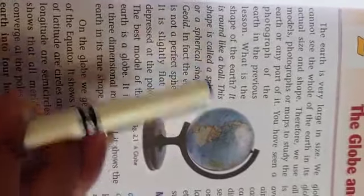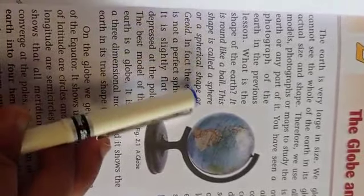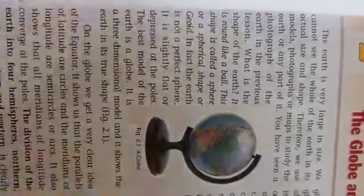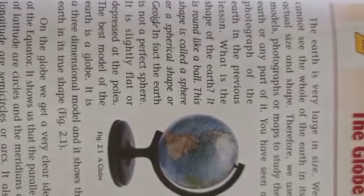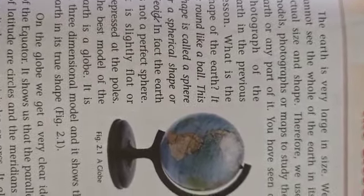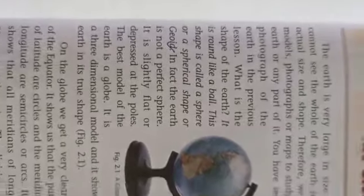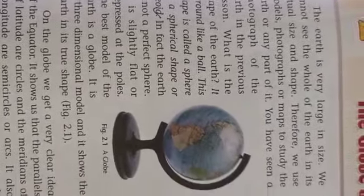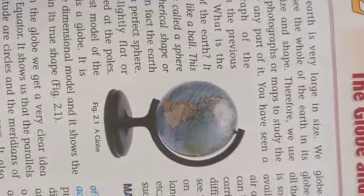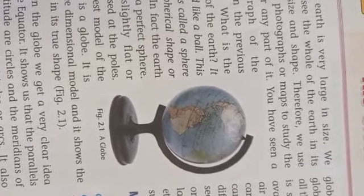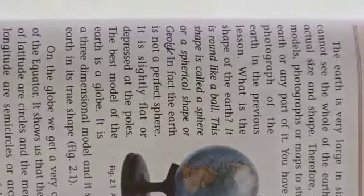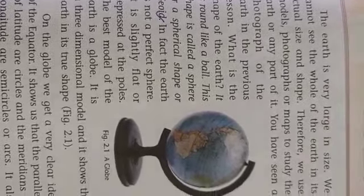This shape is called a sphere or a spherical shape or a geoid. So we represent the earth by globe, map, sketches and plans. Each of these representations has various advantages and we use them according to our need.